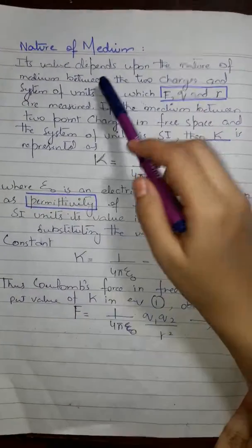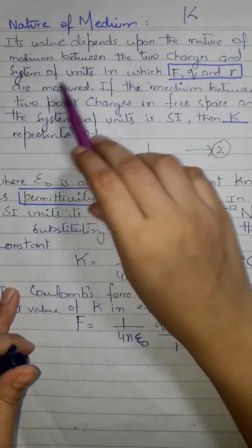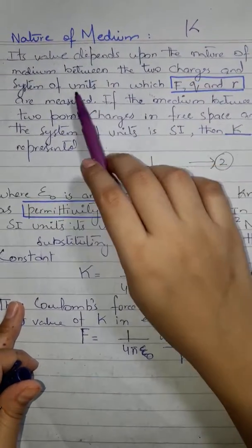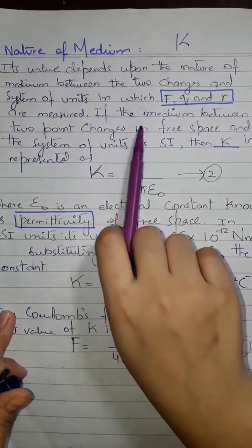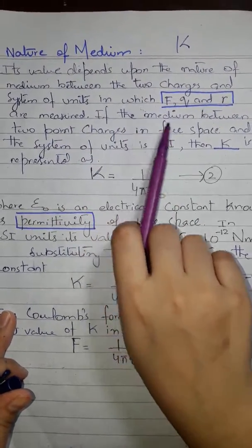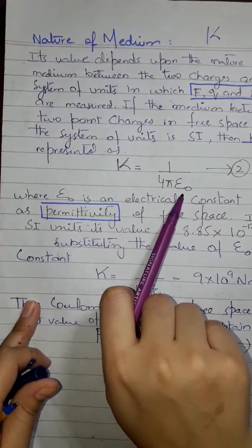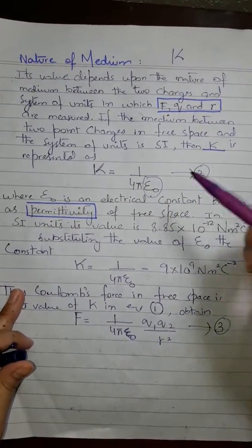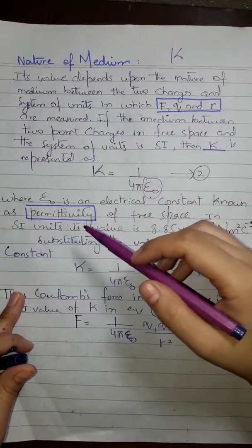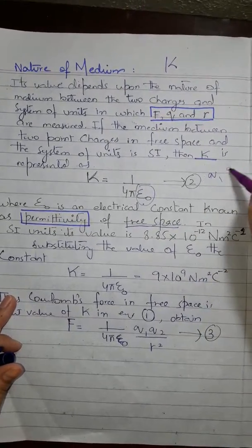It must be noted that the whole procedure depends on the medium. The nature of the medium must be taken into account when counting charges and the forces between them. The proportionality constant k depends upon the nature of the medium between the two charges and the system of units in which F, q, and r are measured.